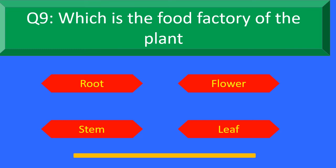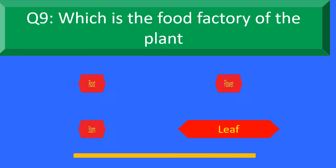And your time is up. The right answer is Option D: Leaf. Leaf is the food factory of the plant.